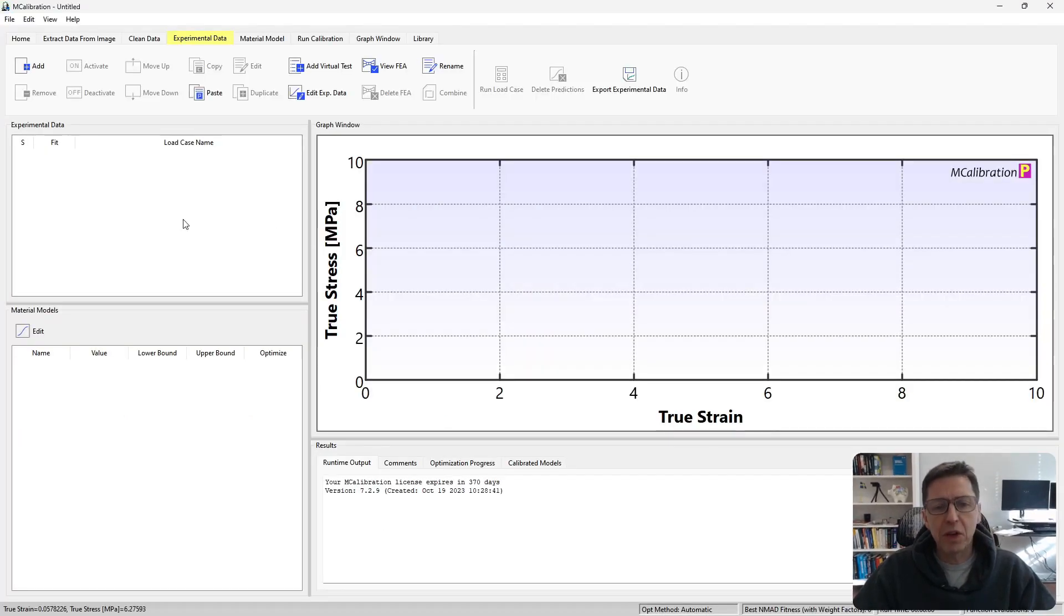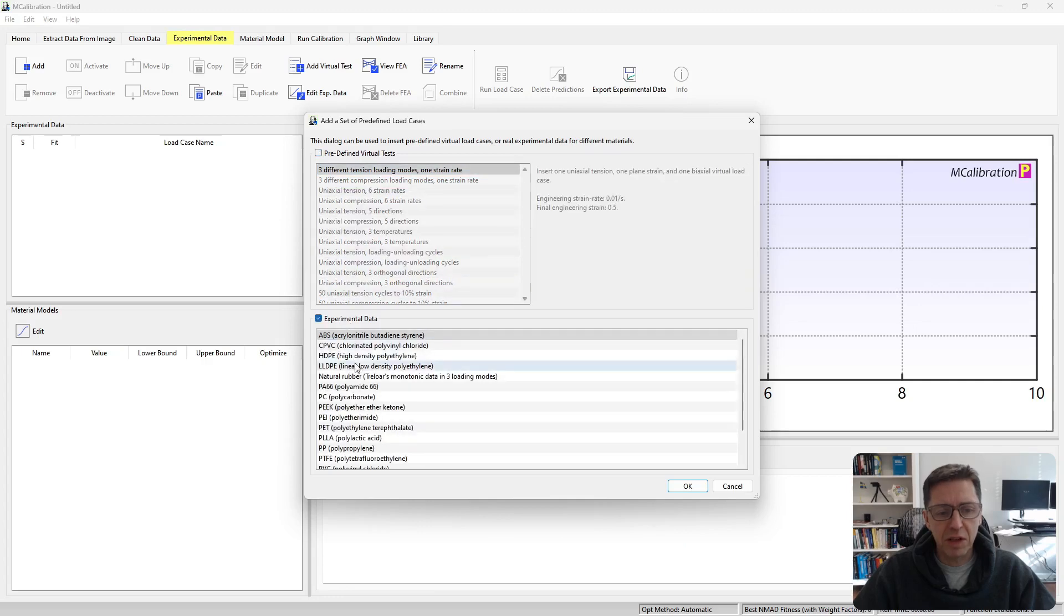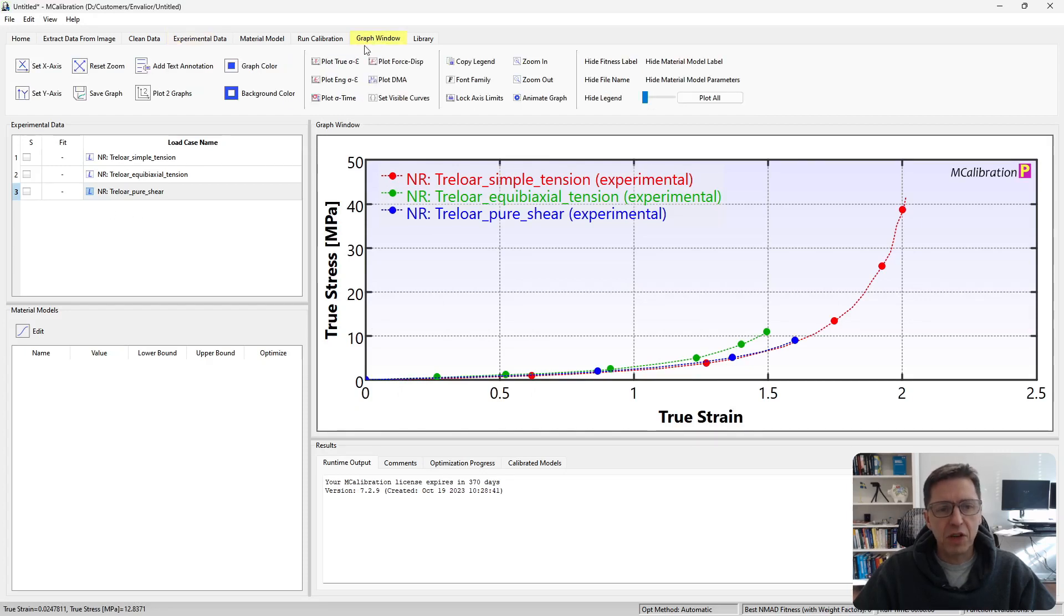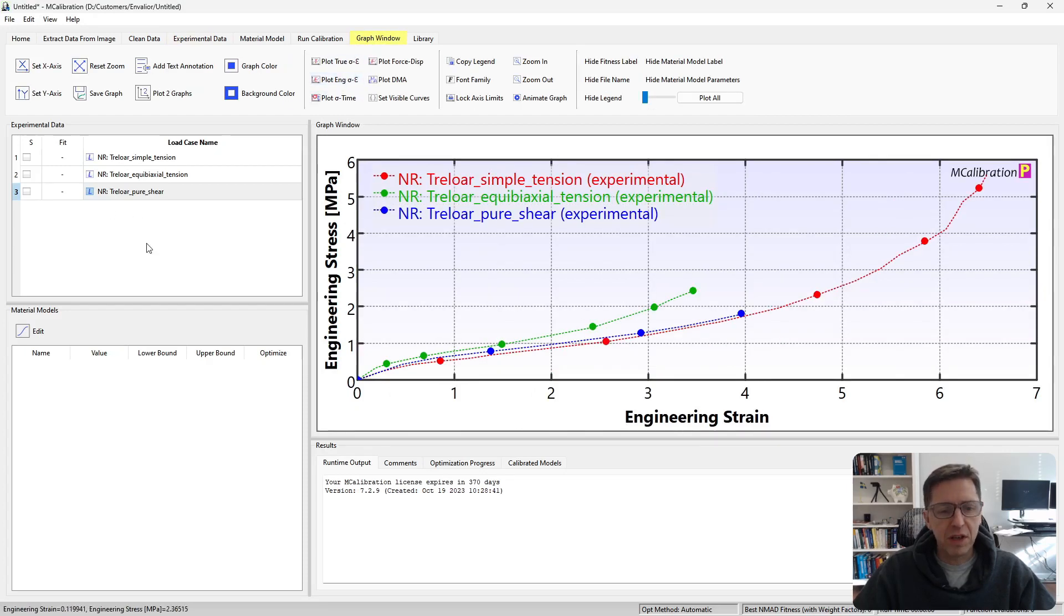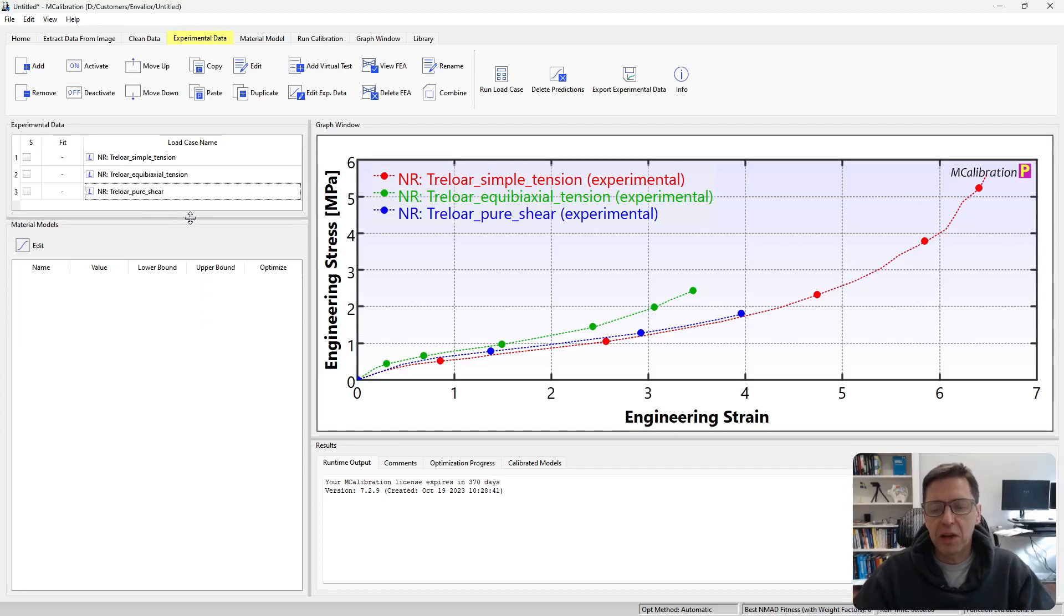Here's a blank window of MCalibration. I'm going to read in some experimental data for a rubber material that comes with the software. I'm going to add virtual test, experimental data, natural rubber Treloar. And then I'm going to switch the graph to plot engineering stress strain data. There are three lines here: the first one is a simple tension, and then we have a biaxial tension and pure shear. These are the three experiments that Treloar performed. Let's explore how these types of hyperelastic models behave.